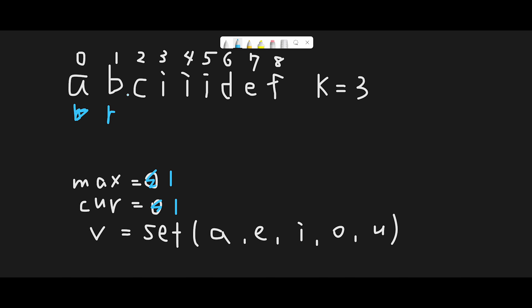Next we find 'b' — there is no 'b' in the vowels set, so we move next. We find 'c' and 'c' is not in the vowels set, so we move next. Then we find 'i' and check the vowels set — 'i' is there, so we add plus one to current_vowels. Now we have reached index 3, so the second condition applies: the right pointer is greater than or equal to k.